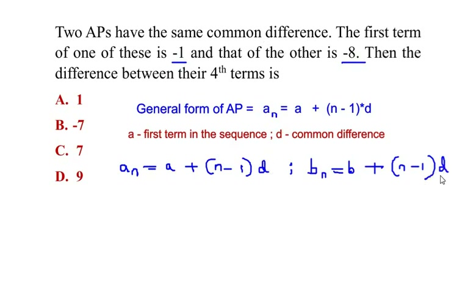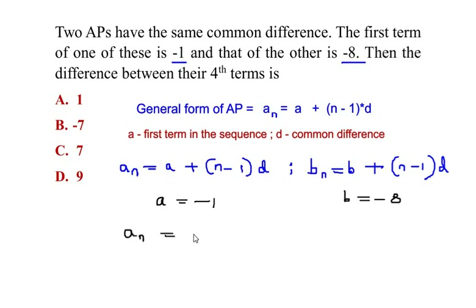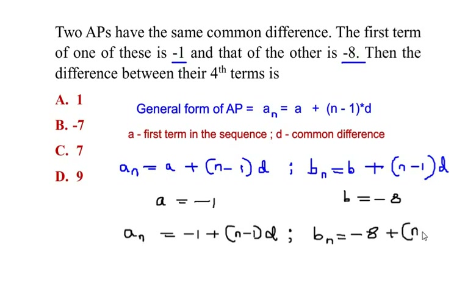The first terms of both arithmetic progressions are given. For a_n, the first term a is negative 1, and b is equal to negative 8. Substituting these values, we get a_n is equal to negative 1 plus n minus 1 times d, and b_n is equal to negative 8 plus n minus 1 times d.